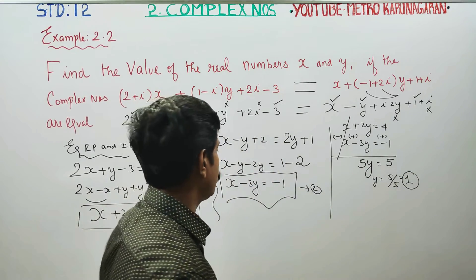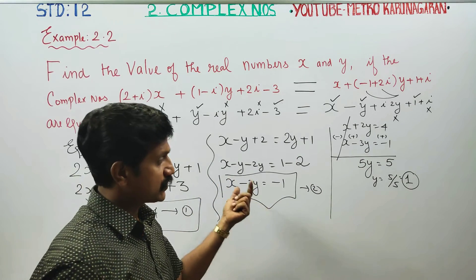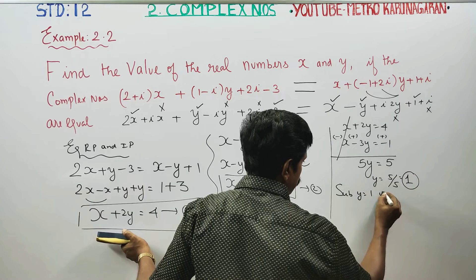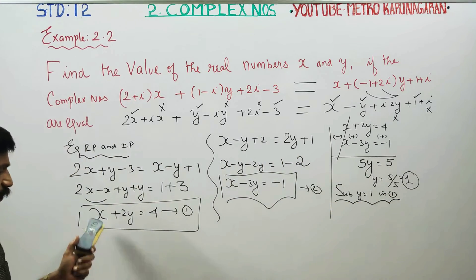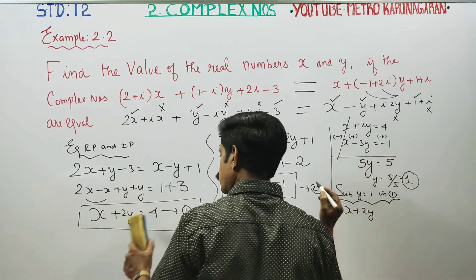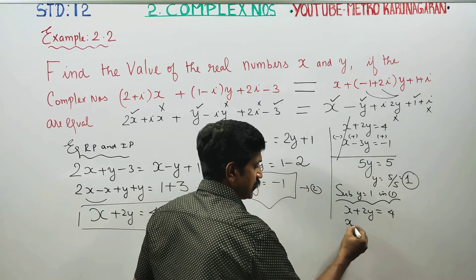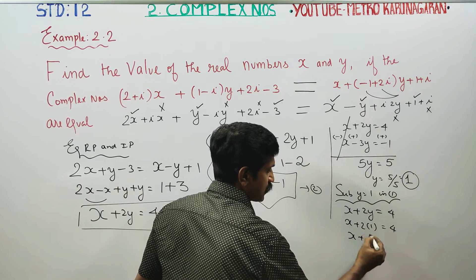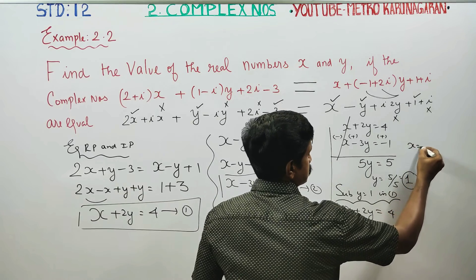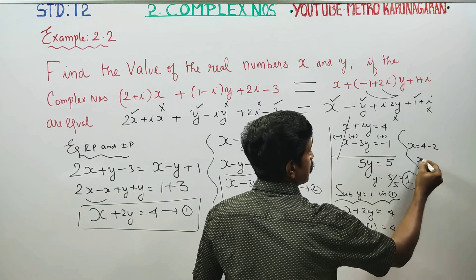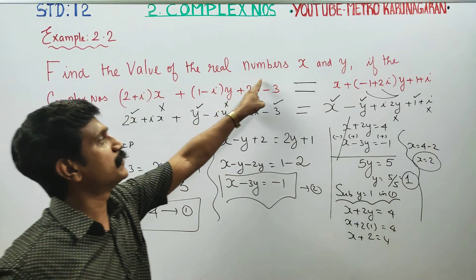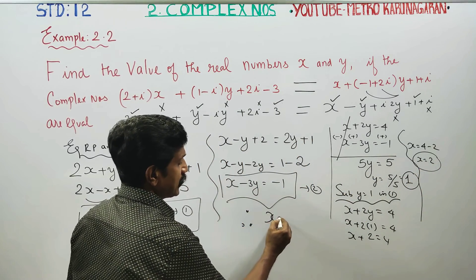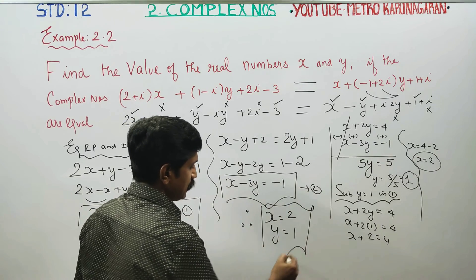After obtaining the value of y, substitute back into Equation 1: x plus 2 times 1 equals 4, so x plus 2 equals 4, therefore x equals 4 minus 2, which gives x equals 2. Find the real numbers x and y: x equals 2 and y equals 1 is your final answer.